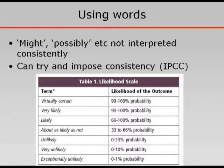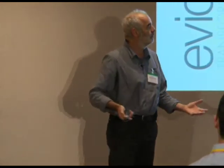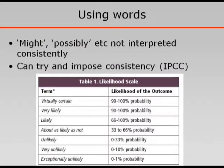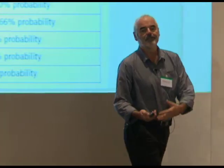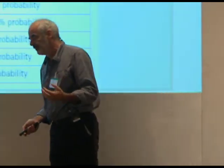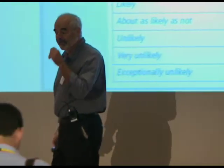Using words: in everyday life we say things might happen, they could happen, they could possibly happen. How good are these at communication? There have been endless studies showing that these mean very different things to many people. You can try to improve consistency — for example, the IPCC, when assessing probability of findings in climate change research, might use words like 'very likely,' but they calibrate it by saying this means between 90 and 100% probability. I think this is very useful: if you are going to use words, make sure they at least have a consistent meaning.